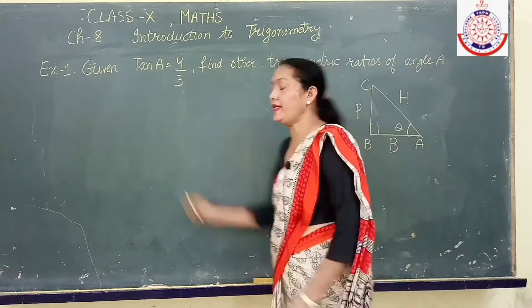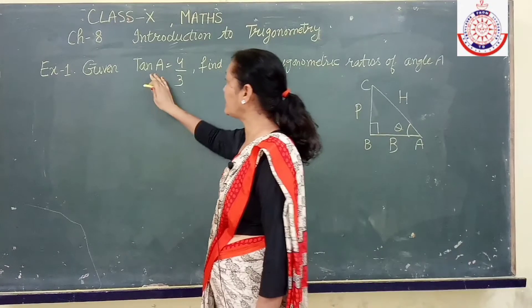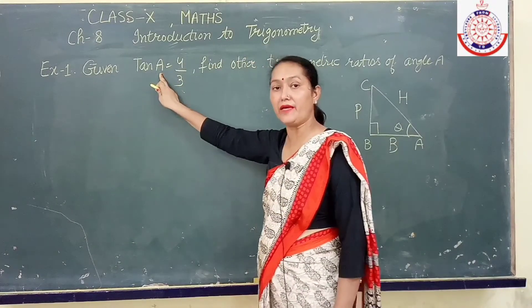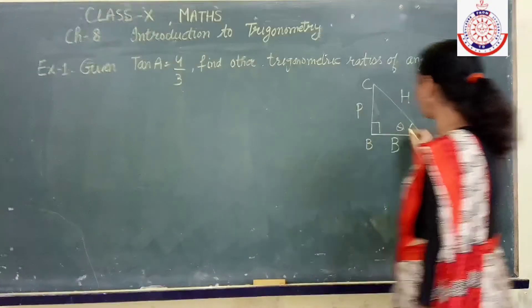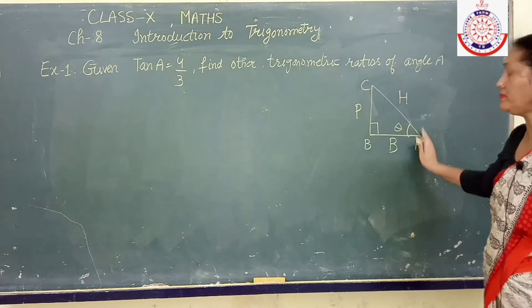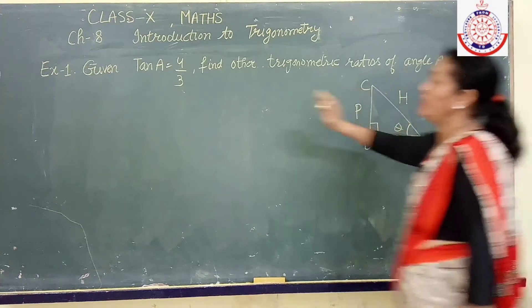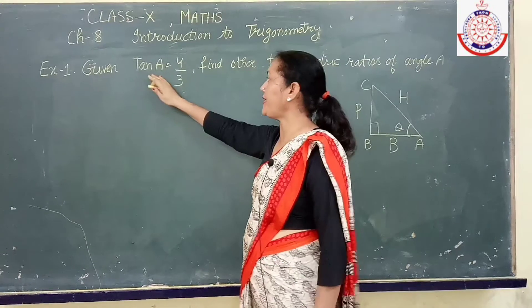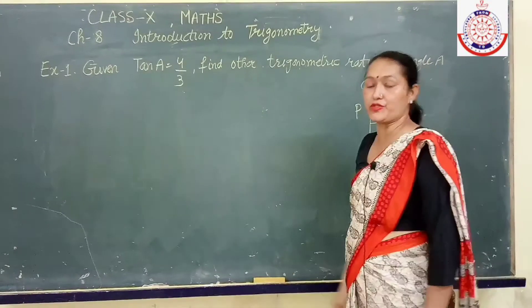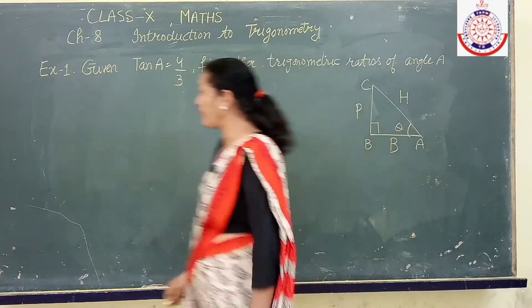To understand the concept more clearly, let us do some examples. In this example, it is given that tangent theta - at place of theta they have written A, means the position of theta is at point A. I have drawn this right angle triangle. Here theta is at position A. It is given that tangent A is 4 upon 3. And we have to find other trigonometric ratios.